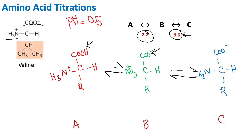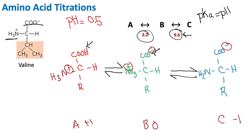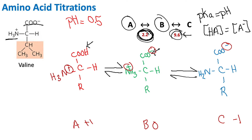We can also see the overall charges. In Form A, the overall charge is +1. In Form B, we have a positive and a negative, so overall our charge is 0. In Form C, we only have a negative charge, so the charge is -1. An important note: when our pKa equals our pH, our concentration of our weak acid and conjugate base will be equal — the two forms will be in equilibrium with one another.